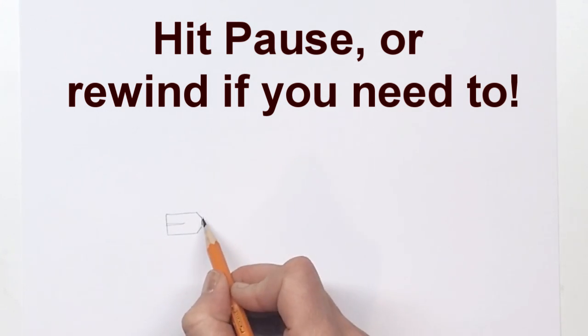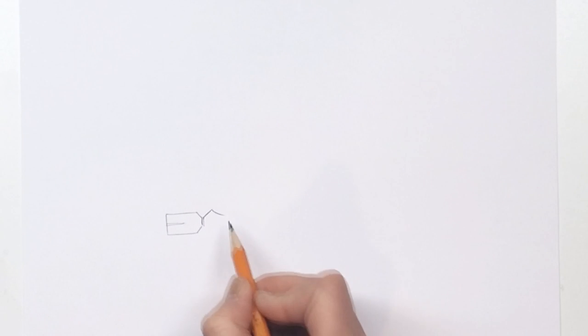And then for the other end of the pen, we're going to draw a little line out this way and over this way and then this is going to come back in to make another rectangle. So there you have your first pen.